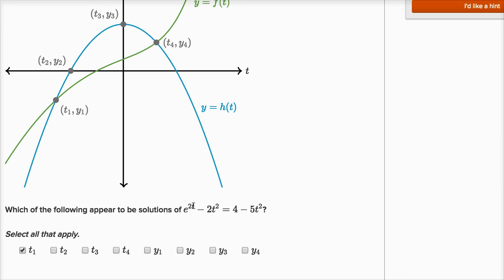So if you took e to the 2 times t sub 4 minus 2t sub 4 squared, that's going to be equal to 4 minus 5 times t sub 4 squared.